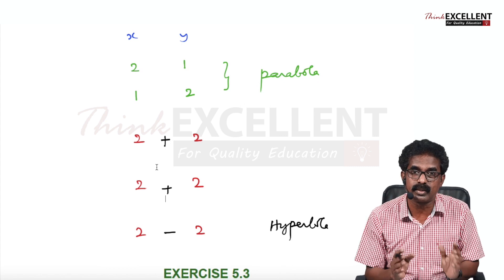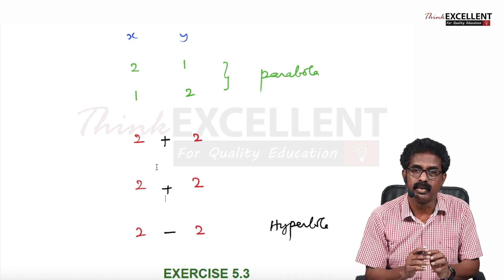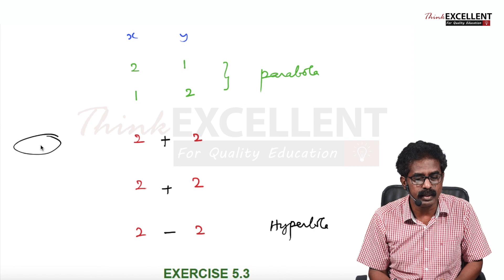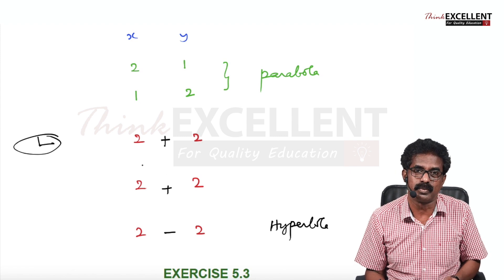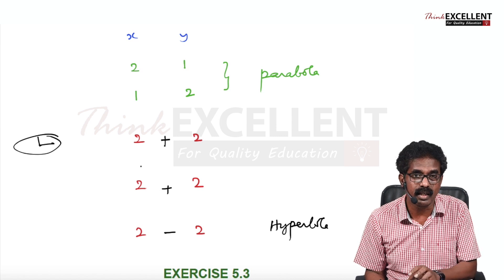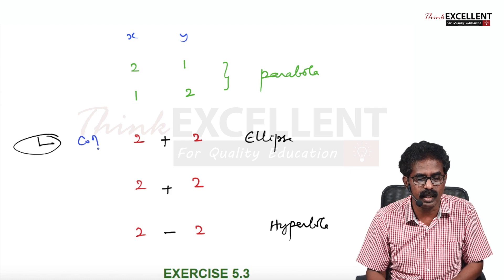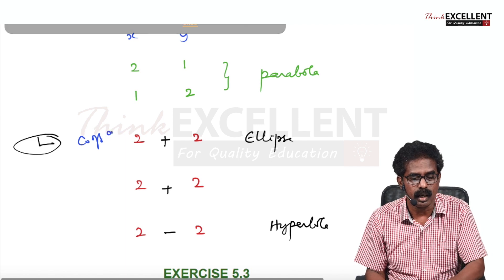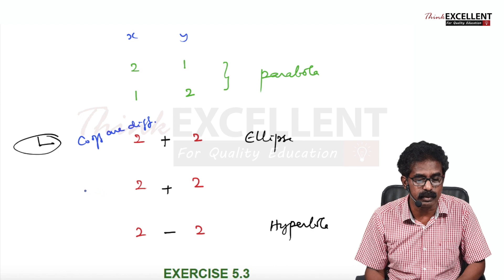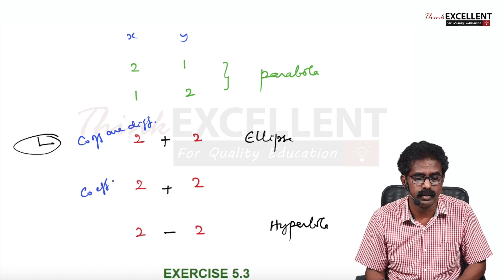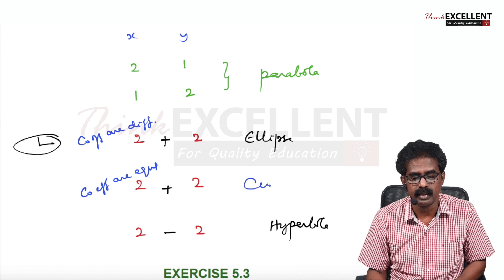So X² and Y² both present, sign in between is plus — then it may be ellipse or circle. Circle is a special case of ellipse: ellipse becomes a circle when A and B are equal. So you also check the coefficients of X² and Y². If they are different, it represents an ellipse; if the coefficients are equal (like 5X² + 5Y² or simply X² + Y²), then it represents a circle.